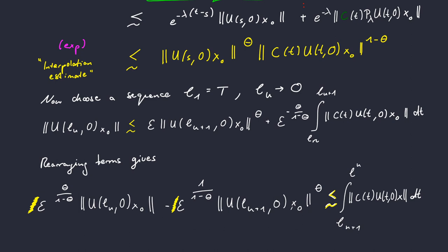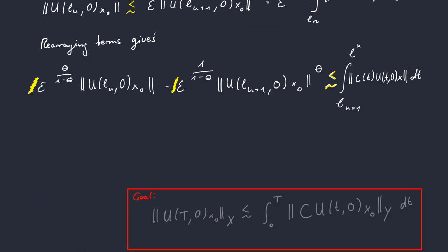Now recall again what our goal was. Our goal was to derive a final state observability estimate. Now the idea is to choose epsilon accordingly and then sum over N. Then the telescoping sum argument and the choice of our sequence L_n will give us our desired estimate.